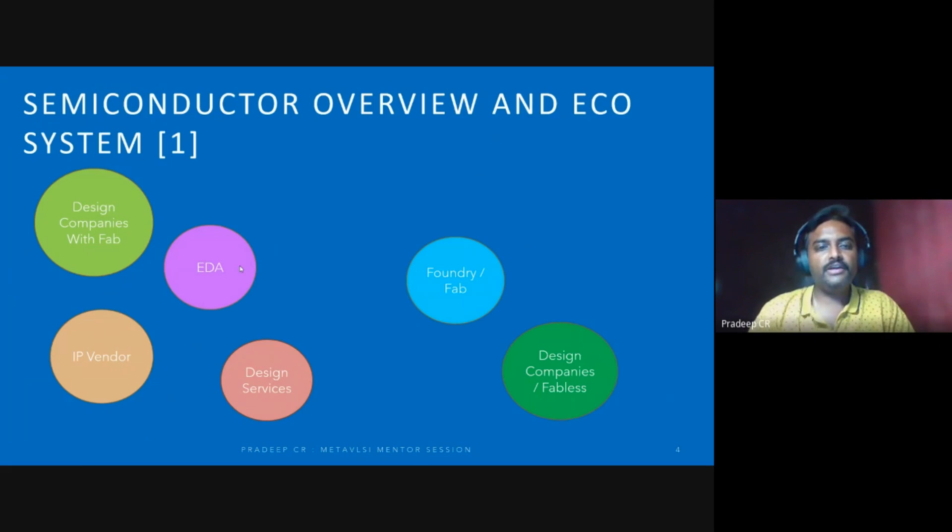The other part of the ecosystem which is very important is design services. You have design companies with fab, without fab, and foundry. Now you have design services - these people are very important because they provide the technical resources. For example, companies doing design like Qualcomm, MediaTek, or Nvidia - they can't have more people, they have limited engineers, so they outsource to design services.